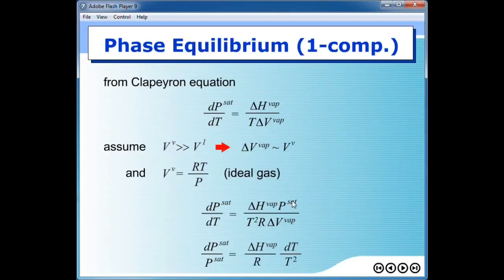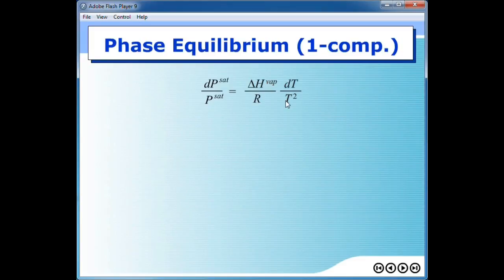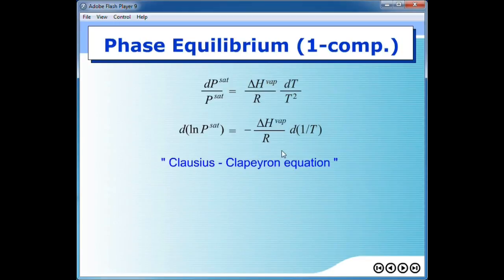To rearrange the equation, take P sat to be on the left-hand side and take dT to the right. And if we assume that the delta H of vaporization is not a function of temperature, we can change 1 over T squared dT to be the differentiation of d of 1 over T. Same thing applies for dP over P to be written as d of the logarithm of P. This equation is sometimes called the Clausius-Clapeyron equation. It is applicable only when we can assume that latent heat of vaporization is not a function of temperature, or it does change slightly with temperature. If we rearrange the equation, it gives the Clausius-Clapeyron equation to be this form.